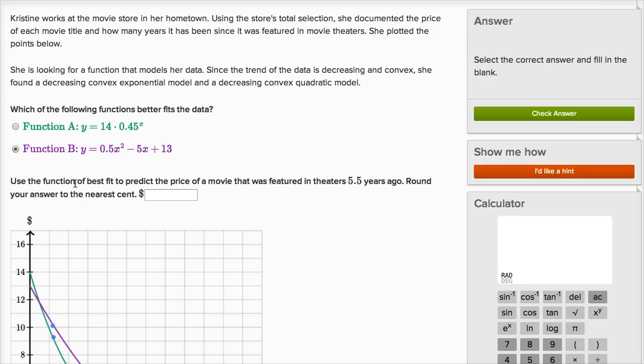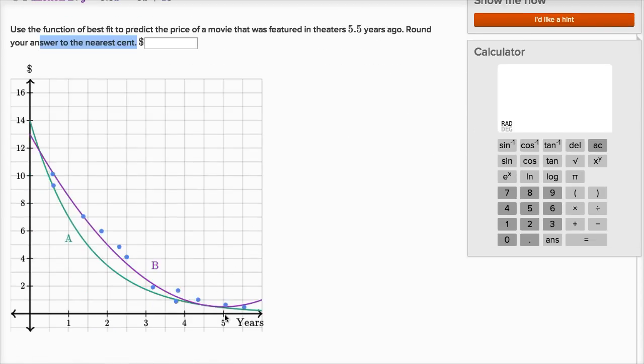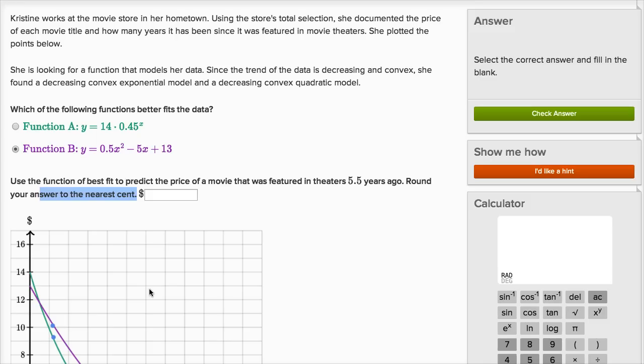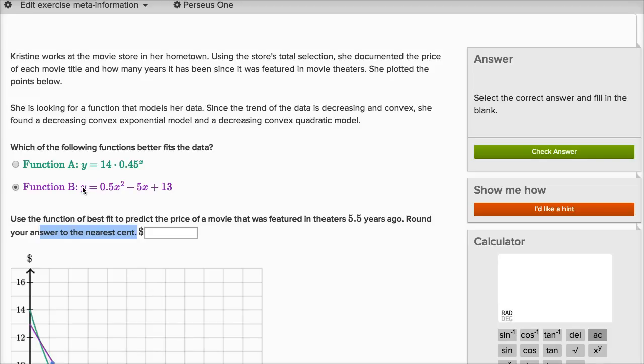Use the function of best fit, so we're gonna say function B, to predict the price of a movie that was featured in theaters 5.5 years ago. Round your answer to the nearest cent. So 5.5 years ago, that's gonna be right over here, we're gonna go to function B, which is this purple one, so it's gonna be under a dollar, but we wanna get something to the nearest cent, so let's actually use the actual definition of the function.